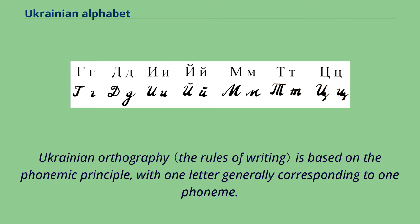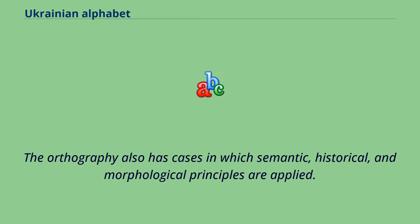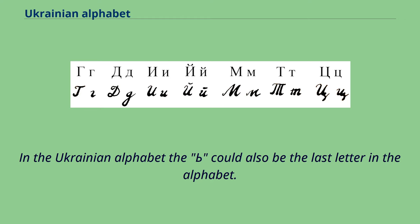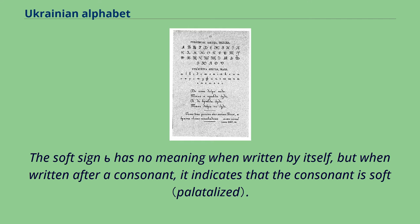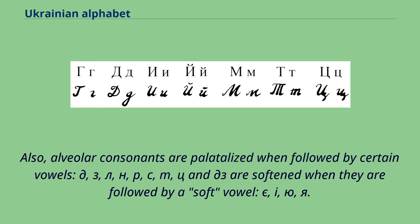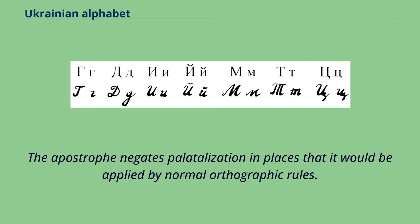Ukrainian orthography is based on the phonemic principle, with one letter generally corresponding to one phoneme. The orthography also has cases in which semantic, historical, and morphological principles are applied. Of the 33 letters, 20 represent consonants, 10 vowels, and two semivowels. The soft sign has no meaning when written by itself, but when written after a consonant it indicates that the consonant is soft. Alveolar consonants are also palatalized when followed by certain vowels.